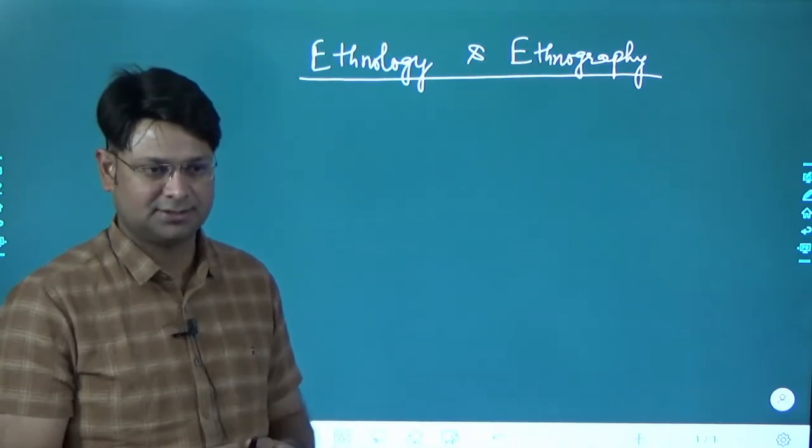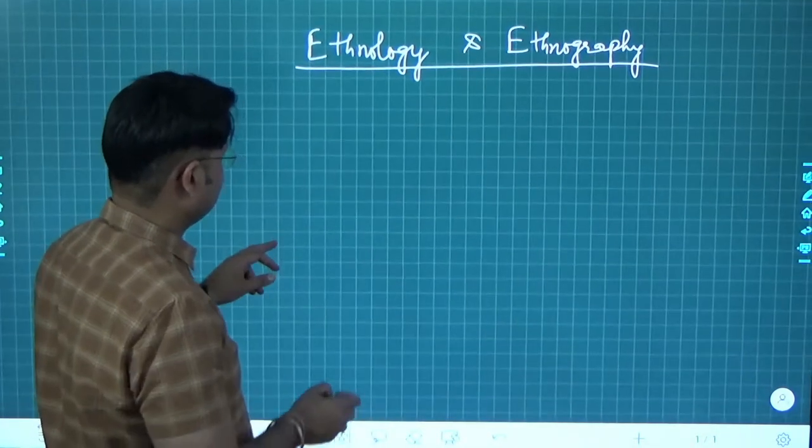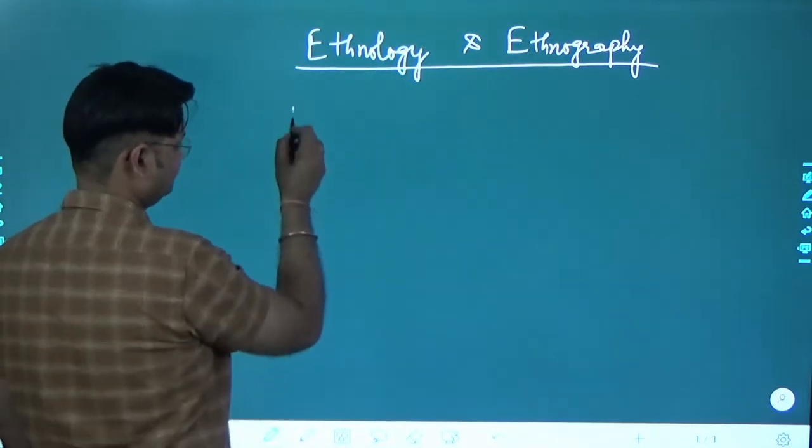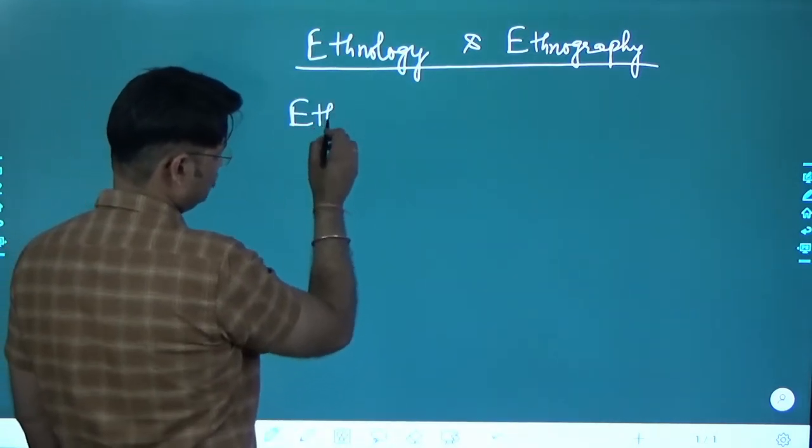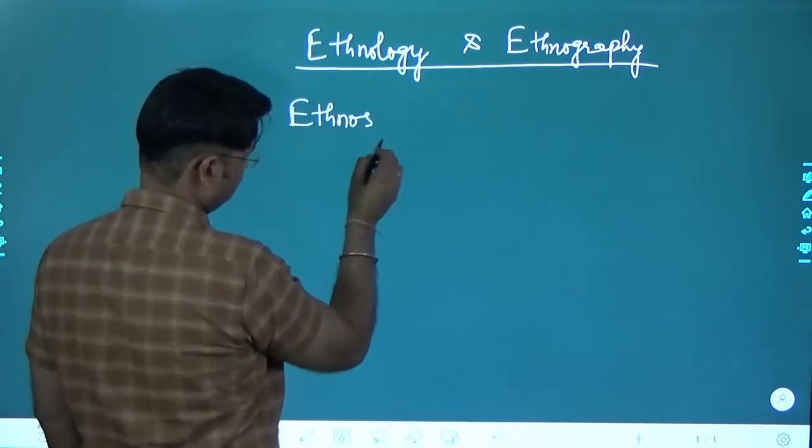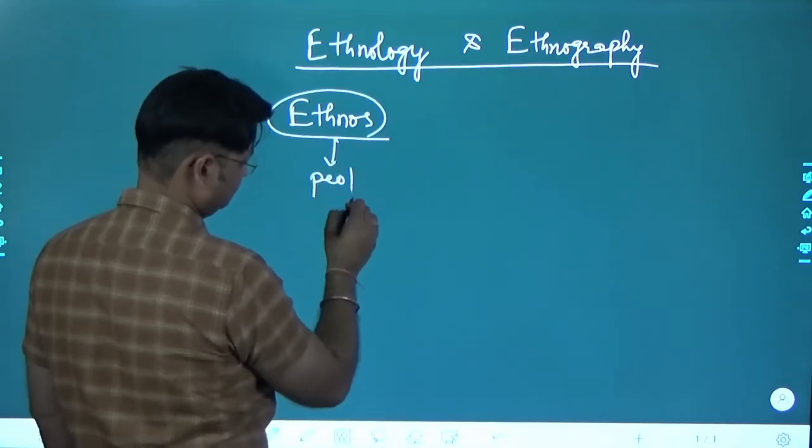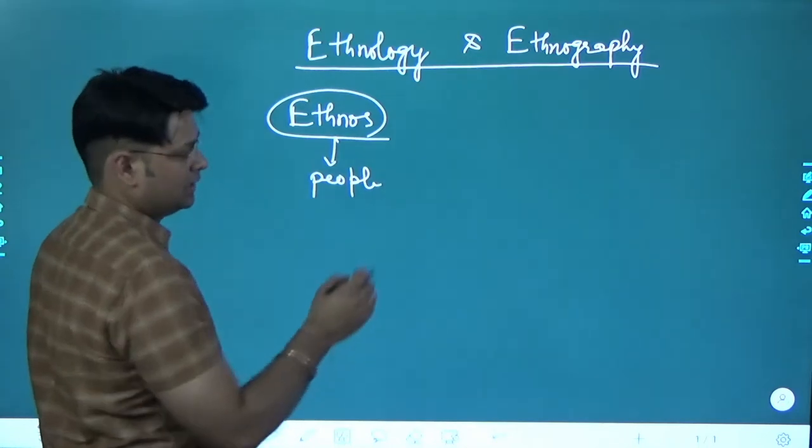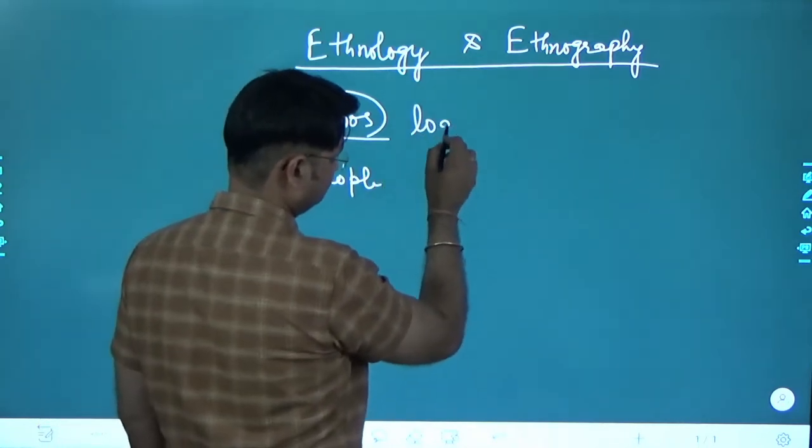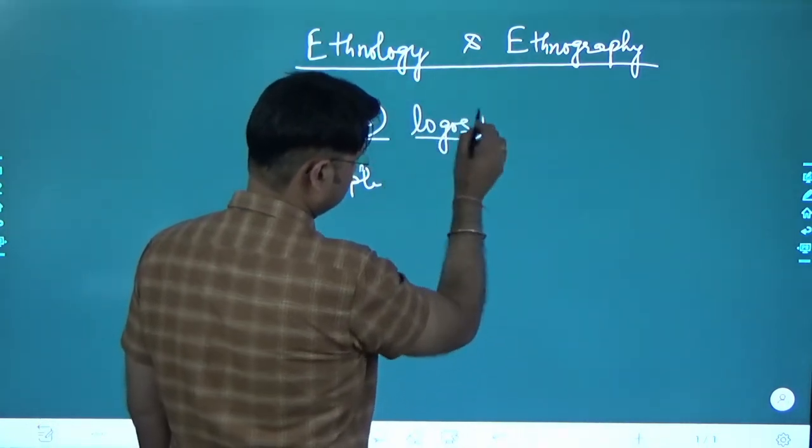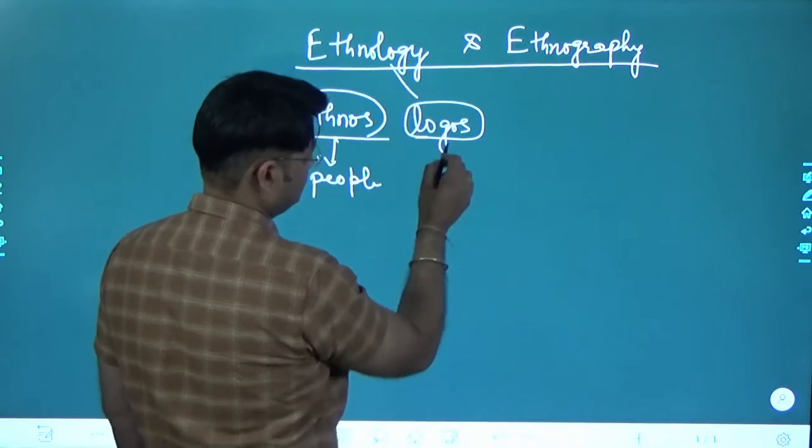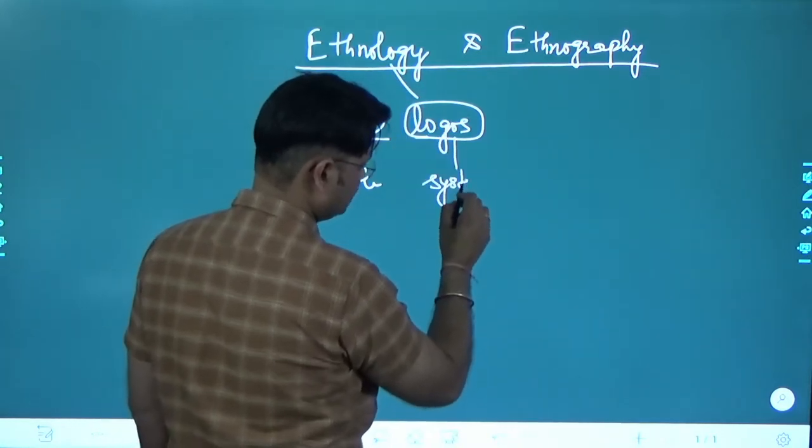First, let us see the etymological meaning. Ethnos means people, and logos means systematic study or science.